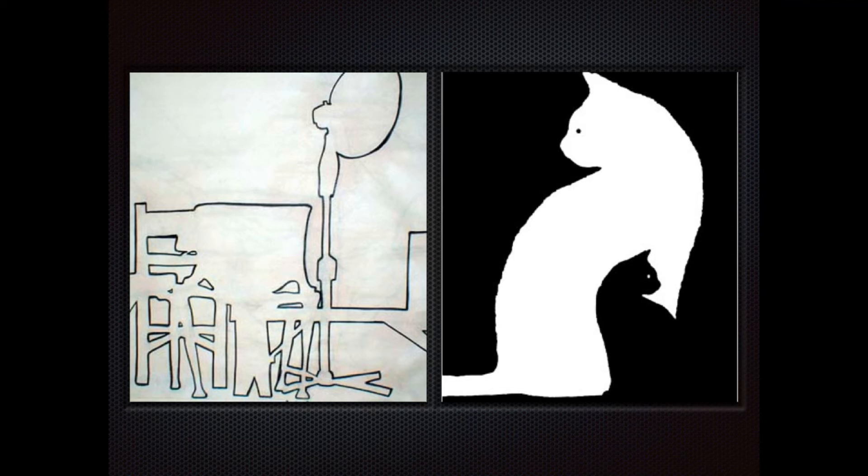If you look at the white cat, it appears to be the positive space and the air around it is the black — the negative space. However, if you focus in on the black cat on the lower right-hand side, it appears to be the positive space and the whole white area appears to be the air, or the negative space.